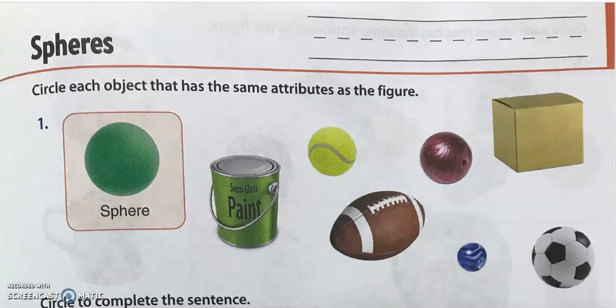Let's say together: spheres! What do spheres look like? It looks like a ball — it looks like it could bounce. Basketball, soccer ball, bowling balls, baseballs — they are all in the shape of a sphere.